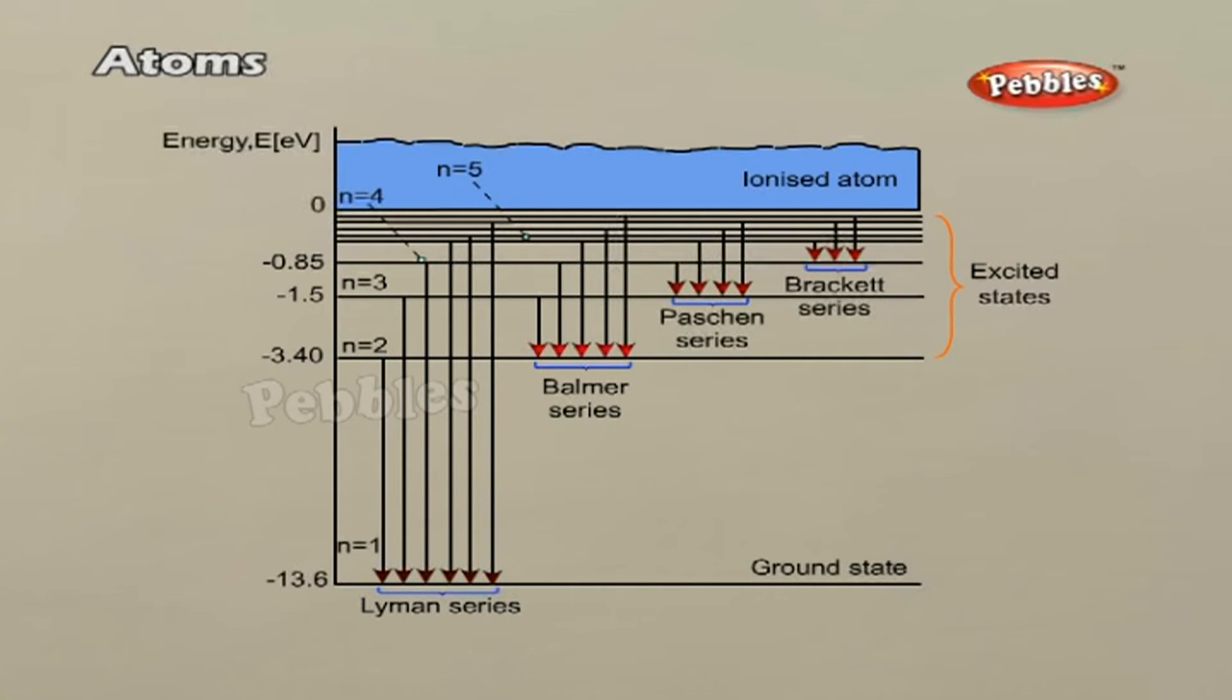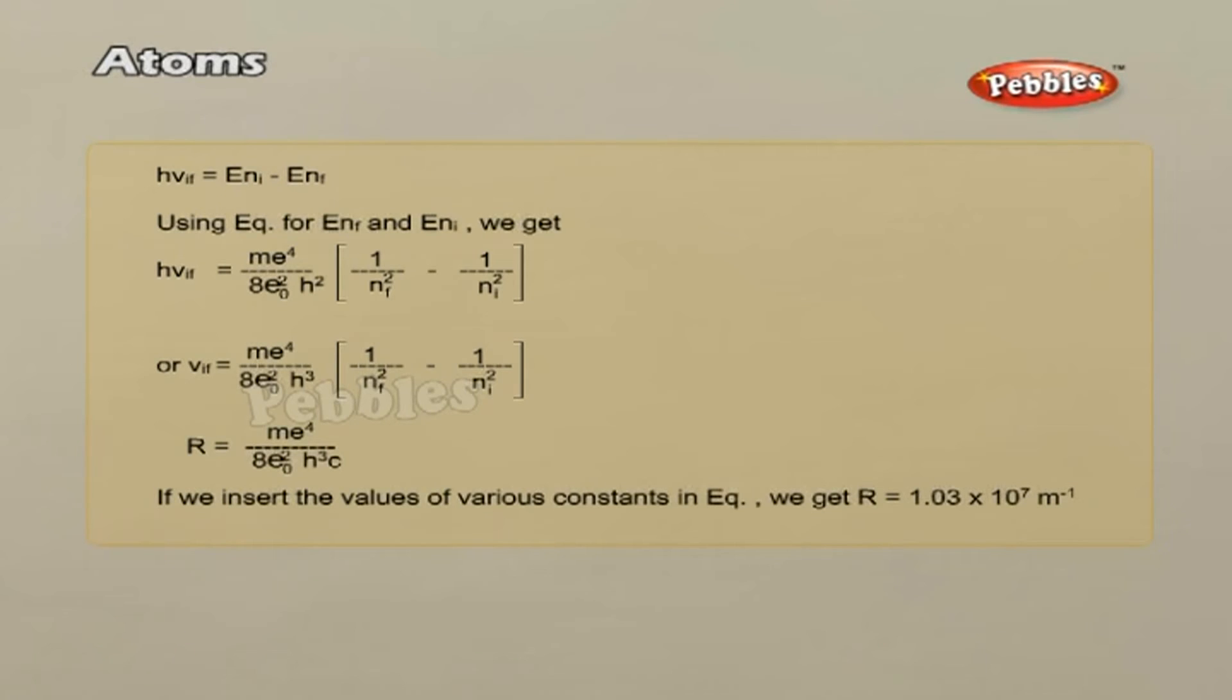Equation of the Rydberg formula for the spectrum of the hydrogen atom. In this relation, we take Ni equals 2, Nf equals 3, 4, 5, etc. It reduces to a form similar to the equation for the Balmer series. The Rydberg constant R is readily identified as shown above.